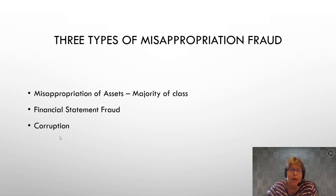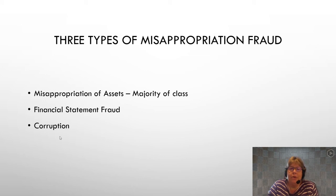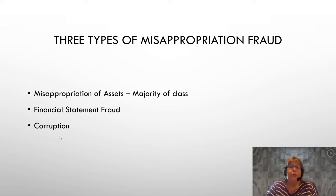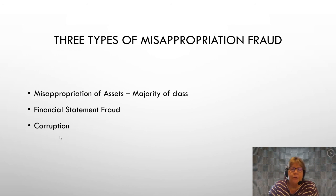Financial statement fraud is basically falsifying your financial statements in order to mislead external parties such as stakeholders, the SEC, those buying your stock, or banks. Corruption is more of a bribery-type fraud where you are trying to pay to get some special treatment. We're really going to focus on the first type and a little bit on the second.